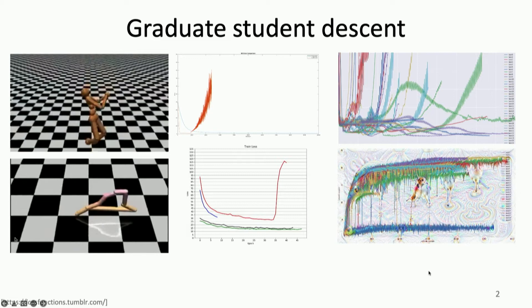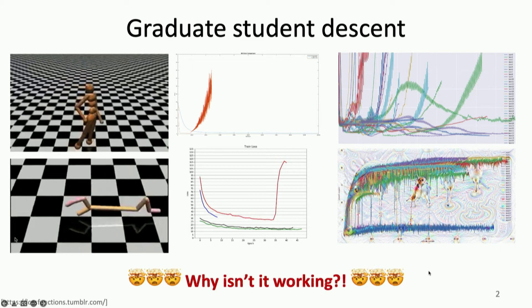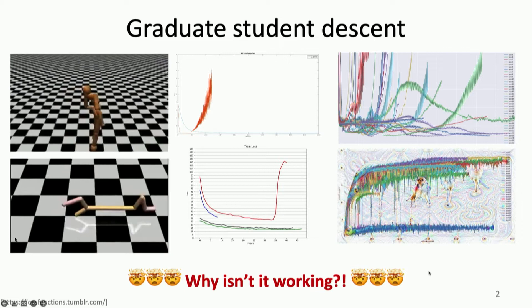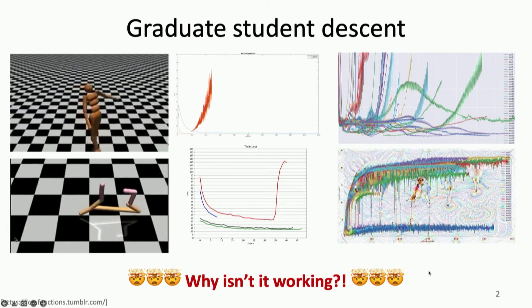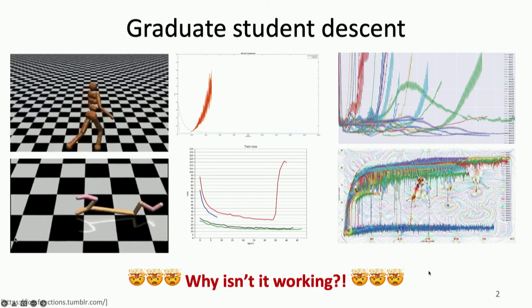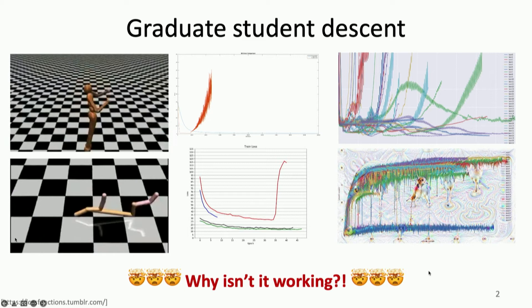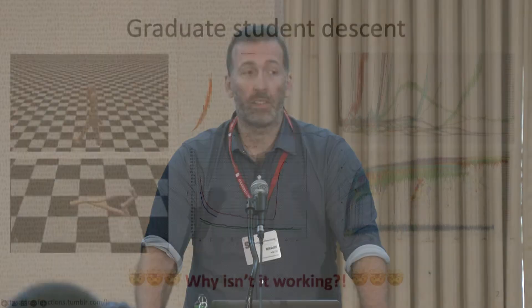More seriously, we want to understand why this isn't working. Why can't I get this to do something useful? There are really two options. One is that if I spend more time hyperparameter tuning, pick a better architecture, or change my cosine learning rate decay, maybe I can get it to work. The other possibility is that this is just a really hard problem, and no matter what I do, it's not going to work. Right now, we really don't have a systematic way of differentiating between those two situations.